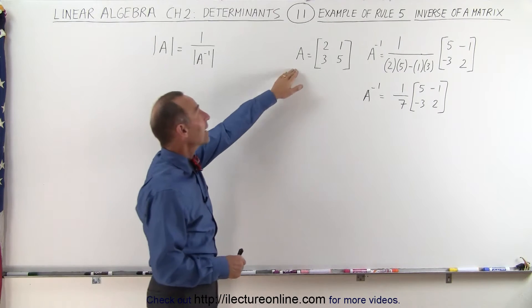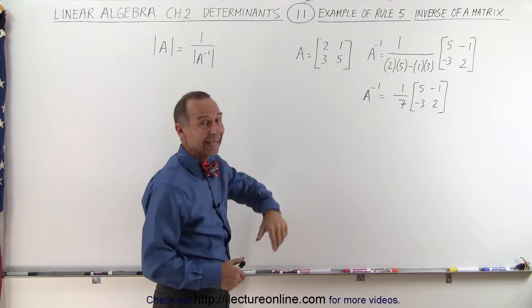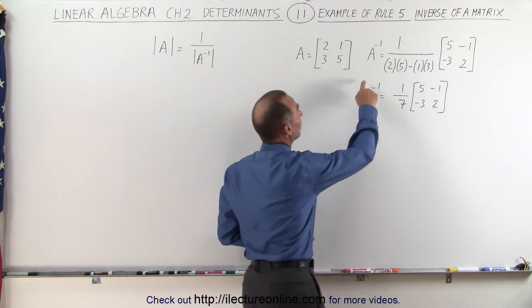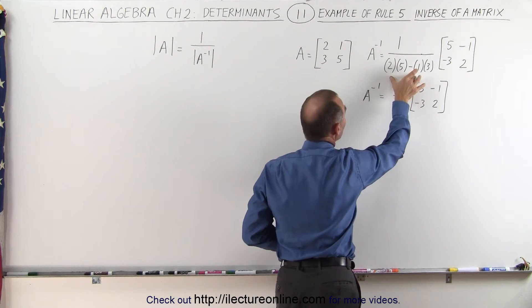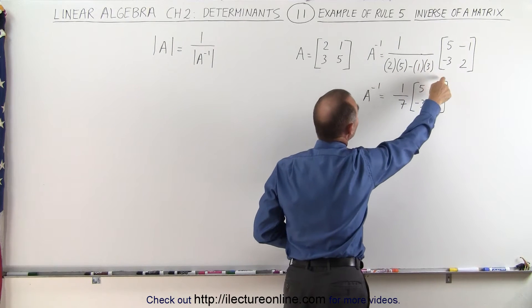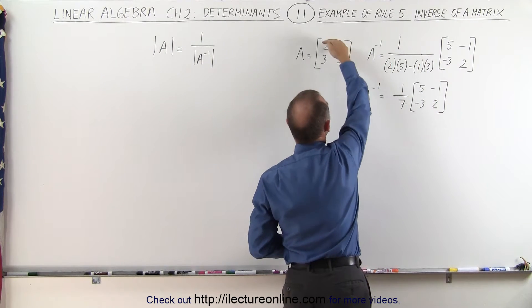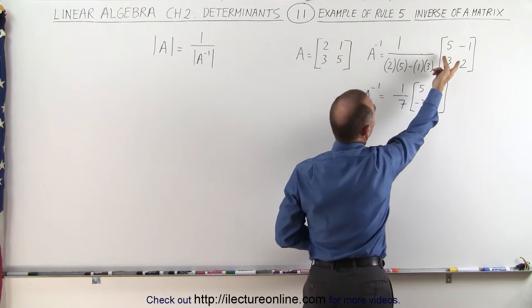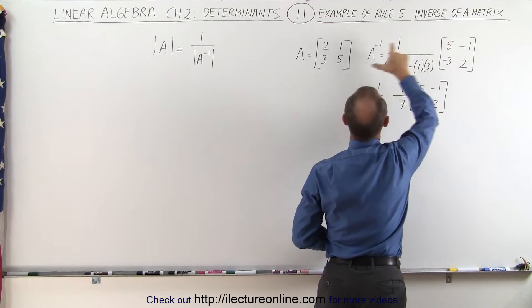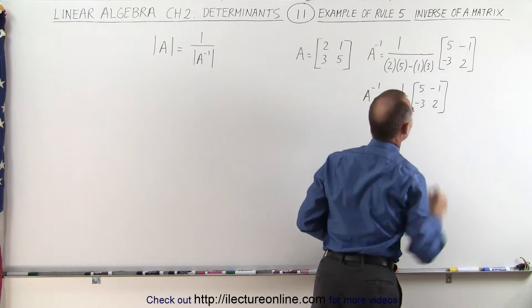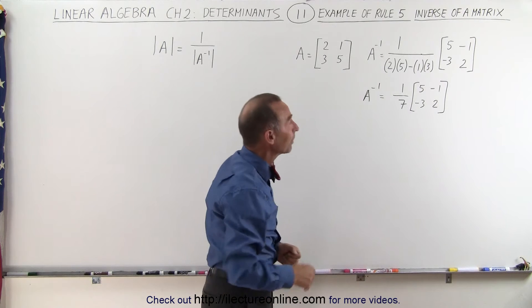So here we have matrix A: 2, 1, 3, and 5, and the inverse of matrix A which is 1 over the determinant of matrix A times—and here we have the elements in this diagonal exchanged and these elements here become the opposite sign. Since they were positive they become negative.